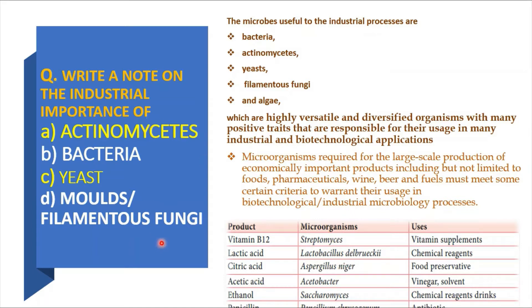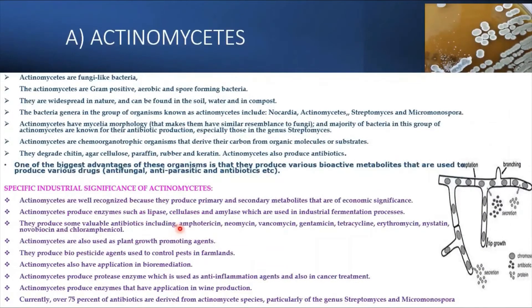Let's see all these microorganisms one by one in detail regarding where they are specifically useful in industrial productions. The first one is actinomyces. Actinomyces are bacterial members but they look like fungi, which is why we call them actinomyces. These are gram-positive, aerobic, and spore-forming bacteria present widespread in nature, found in soil, water, and composting materials.